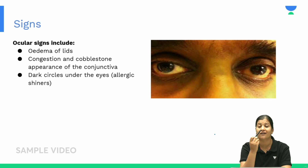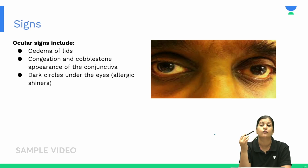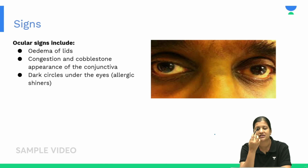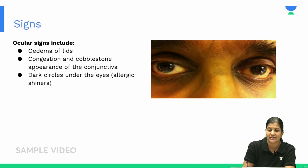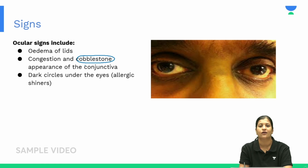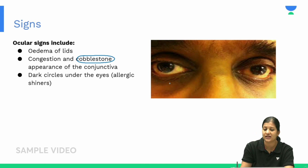Patients can also have associated ocular, pharyngeal, skin, and pulmonary symptoms. The specific ocular signs include redness, congestion, and swelling of the lids. The most specific sign is a cobblestone appearance of the conjunctiva. Additionally, dark circles below the eyes are seen, called allergic shiners.